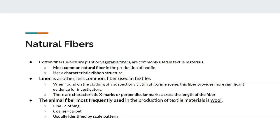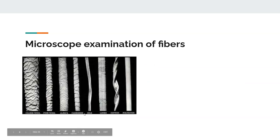Cotton fibers are the most common natural fiber in textiles and have a very characteristic ribbon structure under the microscope. Linen is a less common and expensive vegetable fiber, so finding linen fibers at a crime scene is significant evidence. They have a characteristic X mark or perpendicular mark across the length of the fiber. Wool is the most commonly used animal fiber — fine wool is used for clothing and coarse wool for carpets — and is identified using scale patterns. Examples under the microscope show coarse carpet wool, fine clothing wool, alpaca wool, and cashmere, all of which have a coronal scale pattern indicating animal fiber.